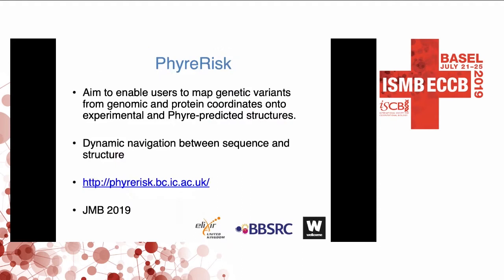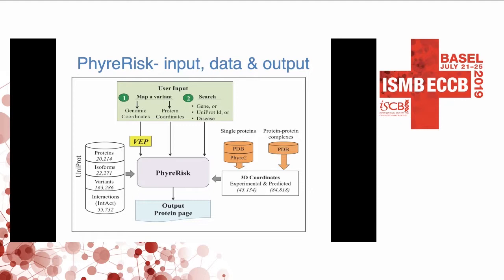Now I want to move on to how FIRE has been used to obtain information about the effects of genetic variants, via FIRE Risk. FIRE Risk enables you to map genetic variants from genomic or protein coordinates onto both experimental structures and FIRE-predicted models. It was recently published in JMB. FIRE Risk takes data from UniProt — it's a human-focused resource — including human proteins, data on isoforms, variant information, and interaction data from IntAct. Structural data for monomeric proteins comes from the PDB expanded with FIRE models, and protein complex information is extracted from the PDB.